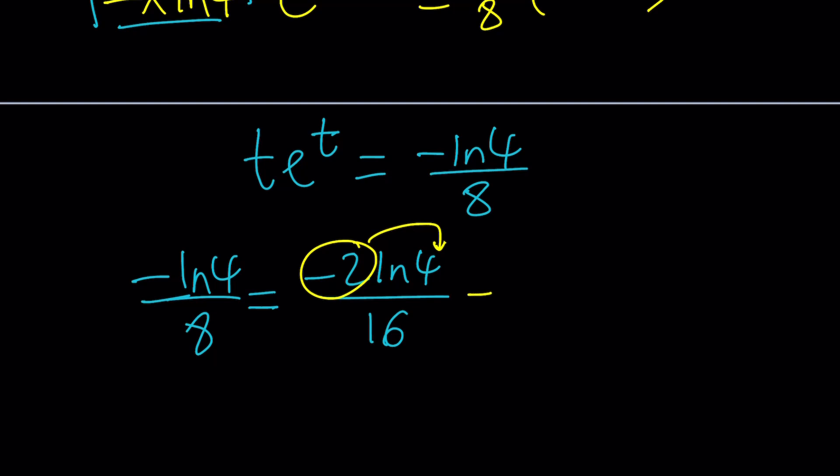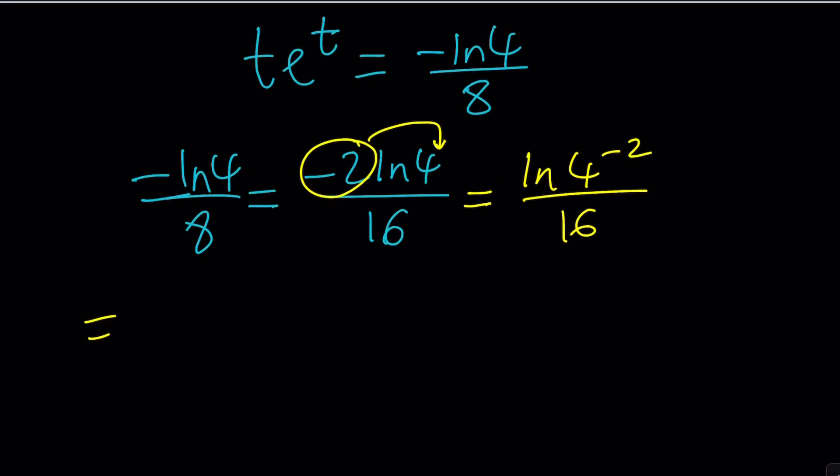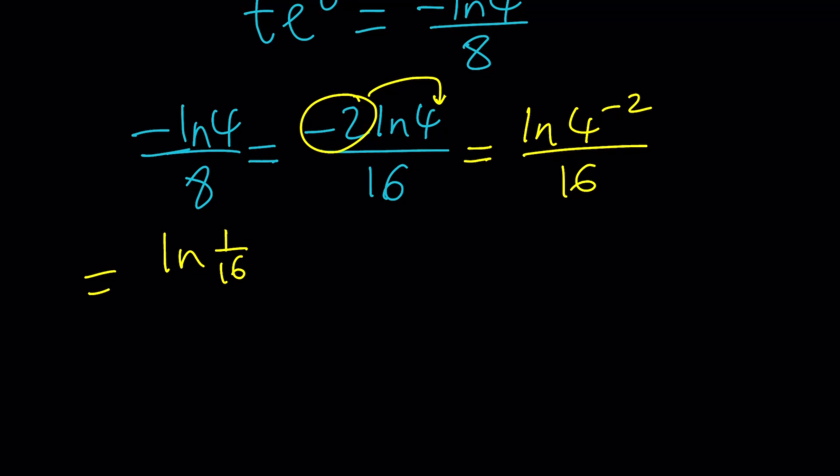So yes, very intricate manipulations. ln(1/16) or 4^(-2) divided by 16. I can write this as ln(1/16) divided by 16 or just write ln(1/16) times 1/16. Make sense? It's more appropriate because we would like to get te^t.